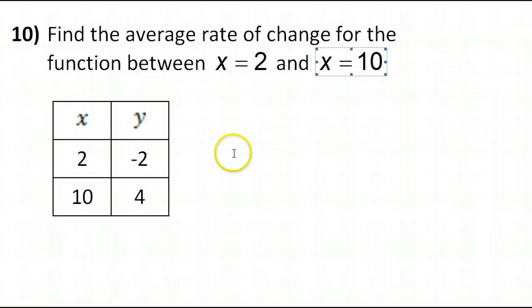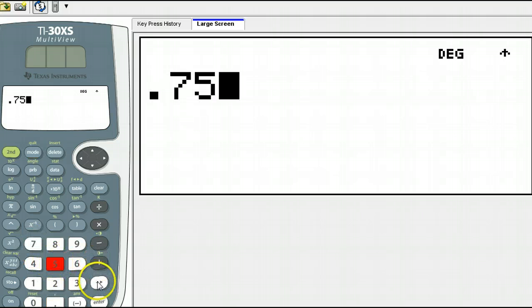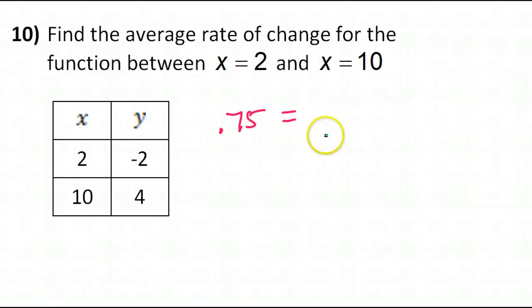Now, let's see, I can go ahead and write that down. So the rate of change is 0.75, but let's go ahead and get that as a fraction as well. So 0.75, toggle it. And so the rate of change is 3 fourths.